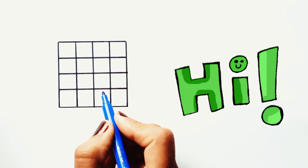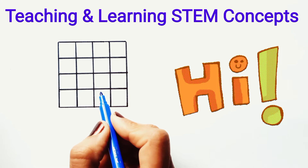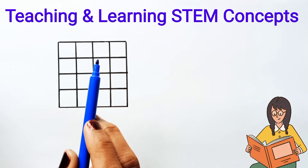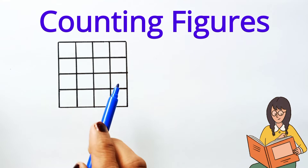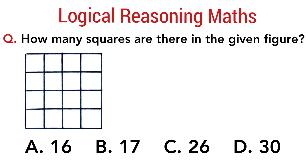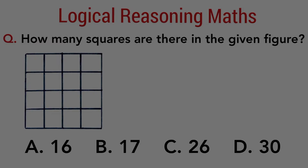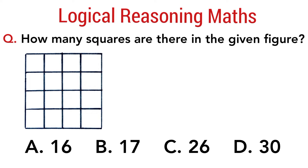Hello everyone, and dear children, once again welcome back to Teaching and Learning STEM Concepts. Today the discussion is going to be about the concept of counting figures. This question comes under the section of logical reasoning in many competitive exams like Olympiad, NTSE, CAT, and other entrance exams. How many squares are there in the given figure? Option A: 16, Option B: 17, Option C: 26, and Option D: 30.